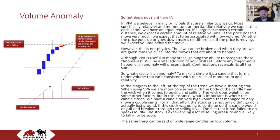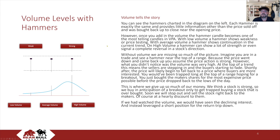The same thing can be said of a wide range candle on low volume. You can see the hammers charted in the diagram on the left. Each hammer is exactly the same and provides little information other than the price sold off and was bought back up to close near the opening price. However, once you add in the volume, the hammer candle becomes one of the most telling candles in VPA. With low volume, a hammer shows weakness or price testing. With average volume, a hammer shows continuation in the current trend. On high volume, a hammer can show a lot of strength or even signal a complete reversal in a stock's direction.